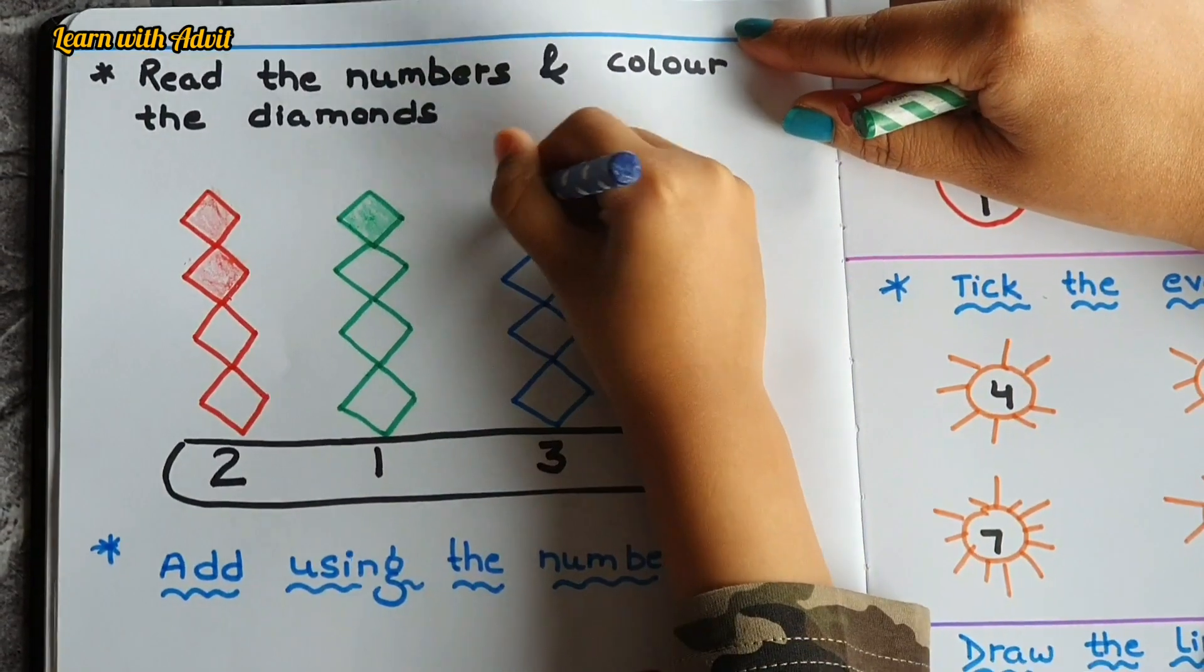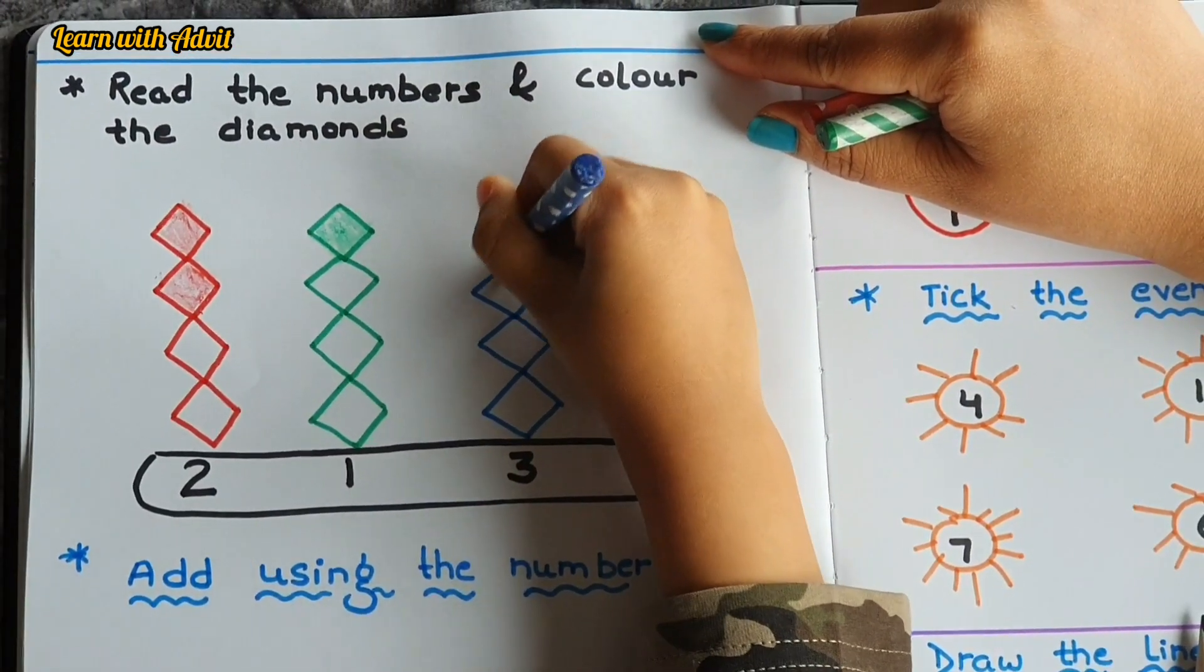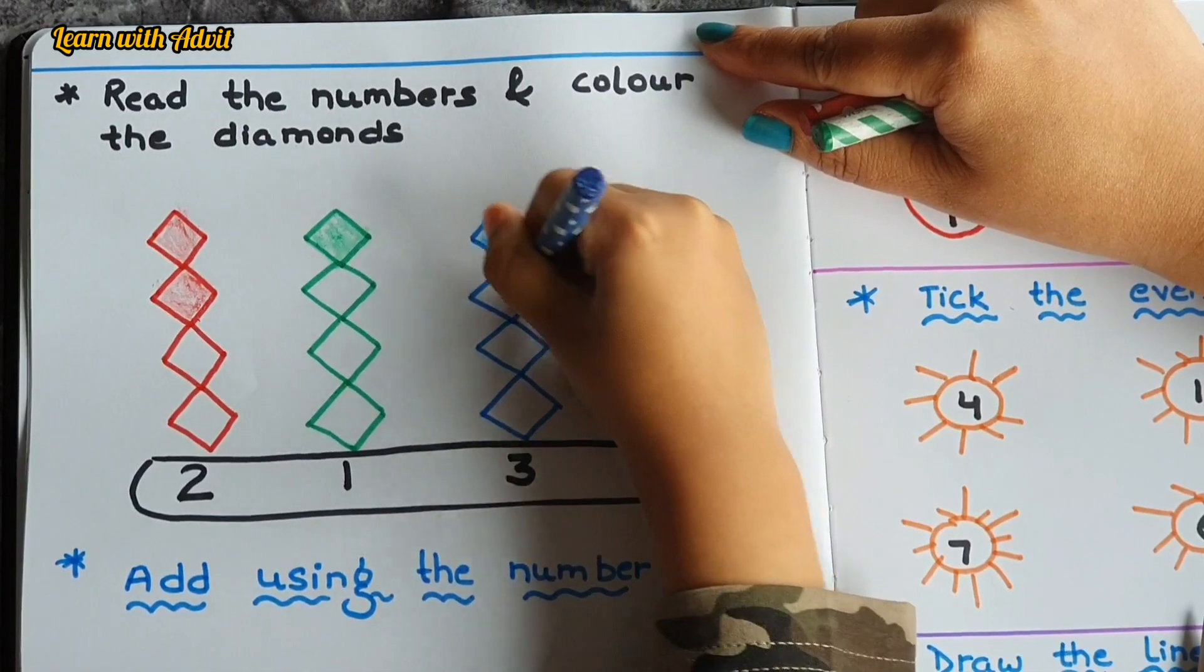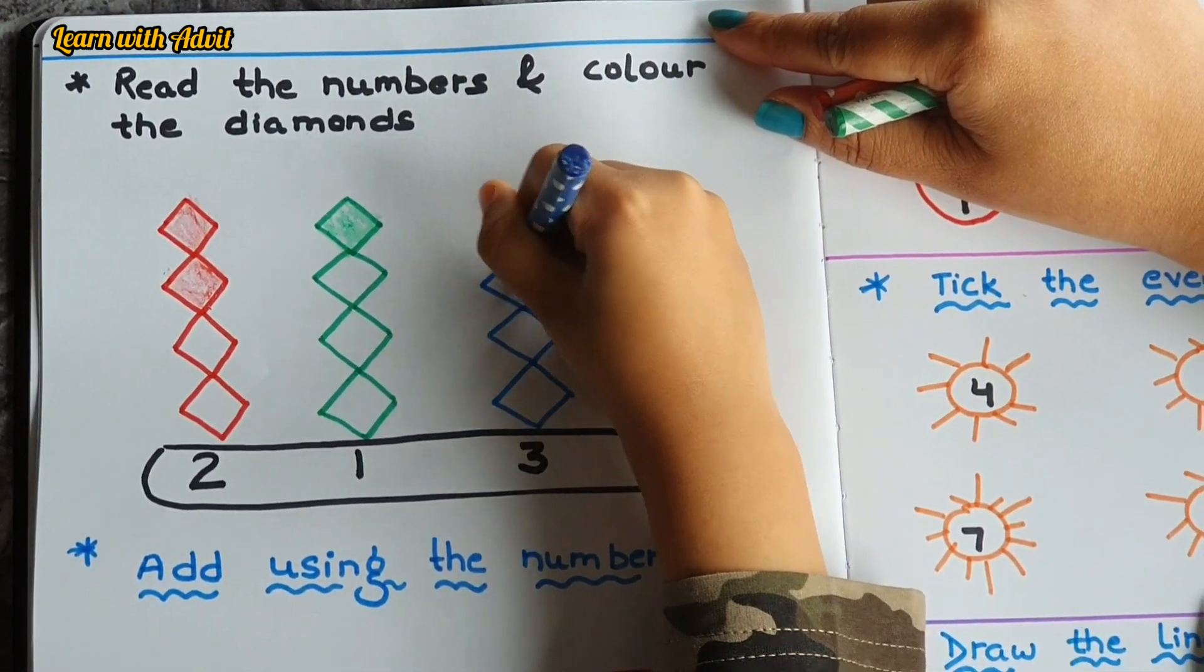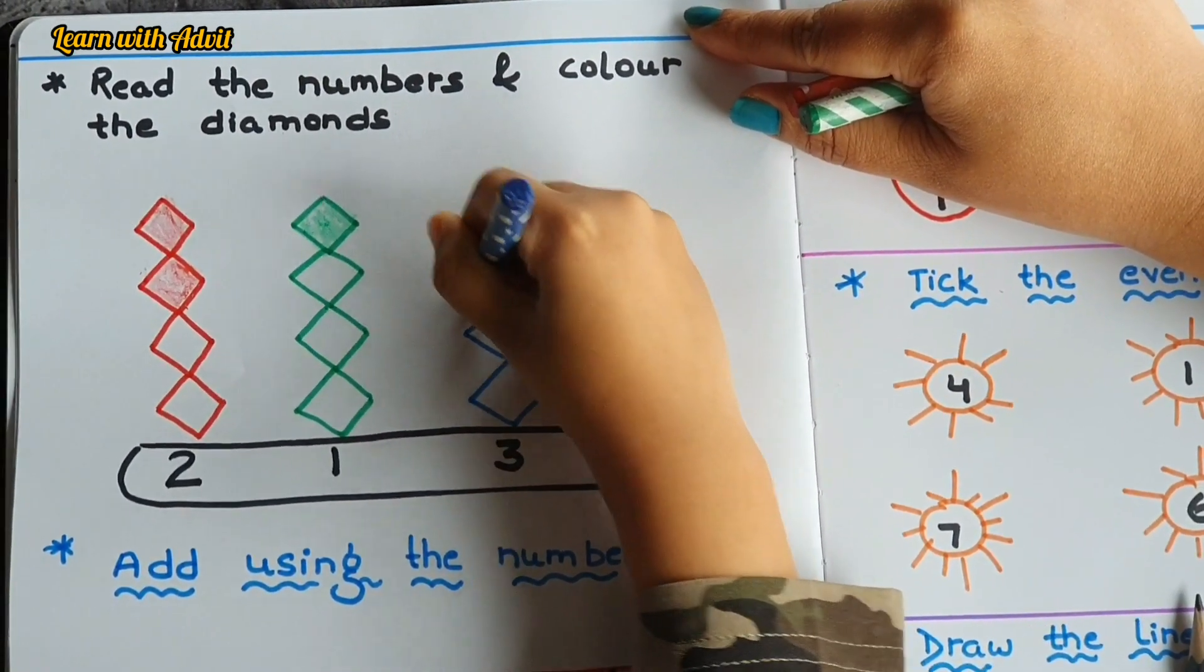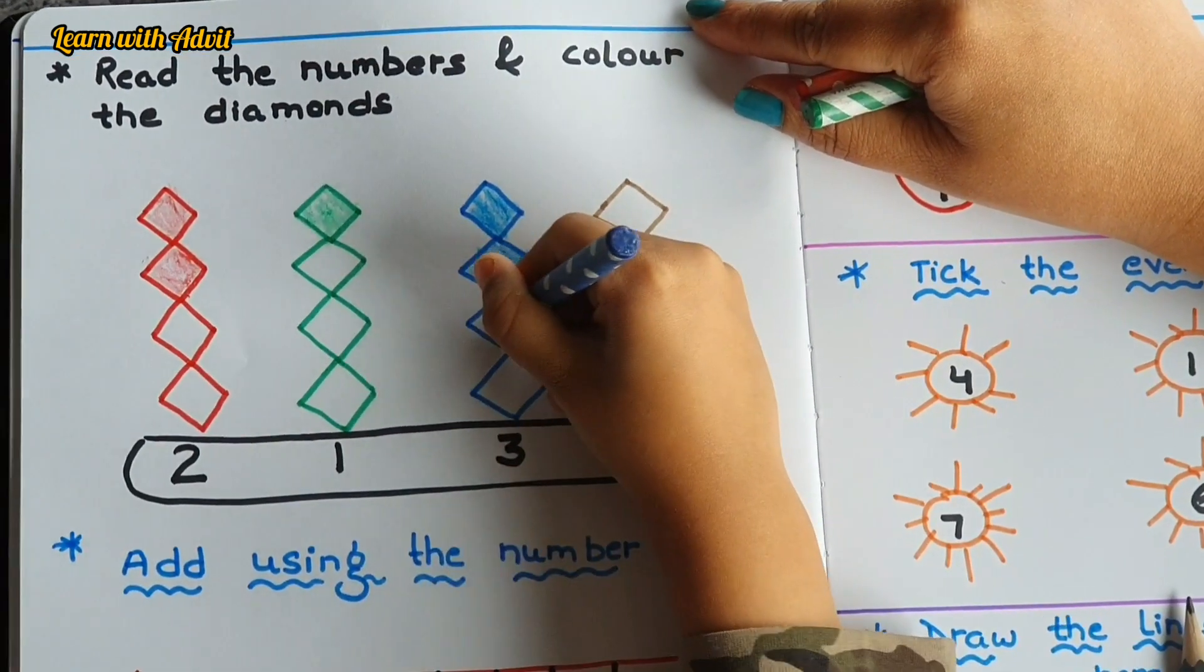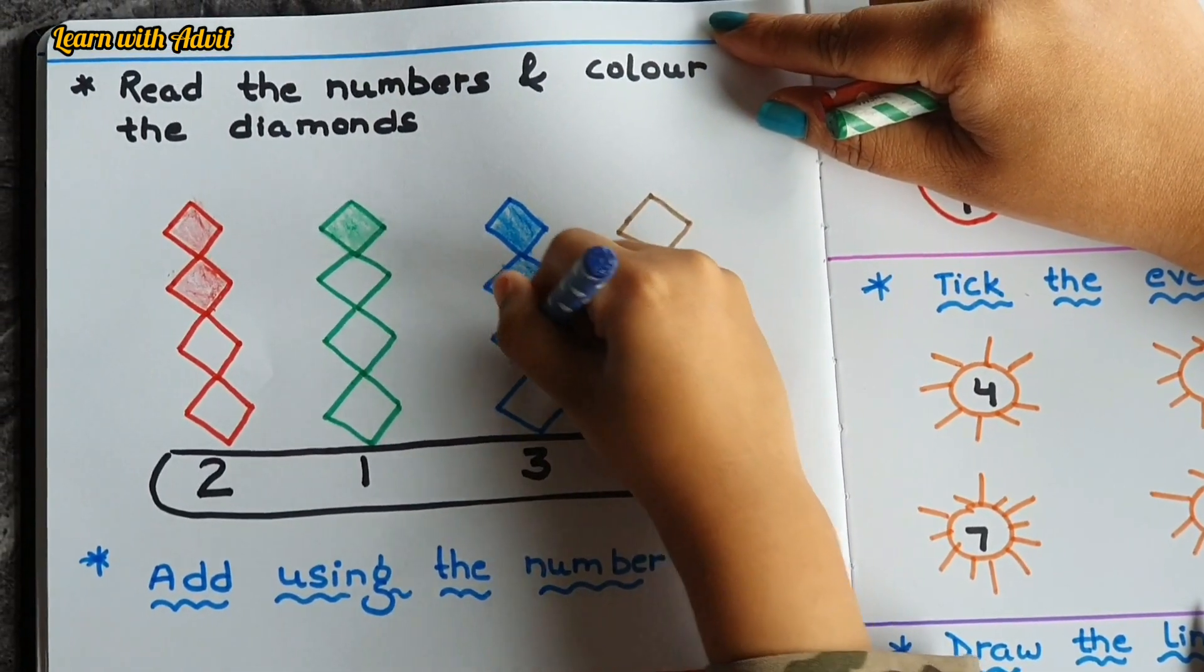Very good, very good. So what is the next number? Then three. Three. It's one, then two, two, two, yes, then three. It's one, then two, very good.